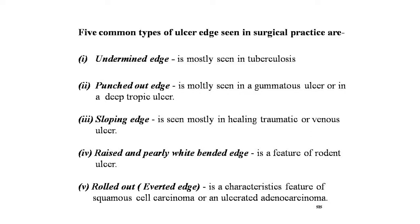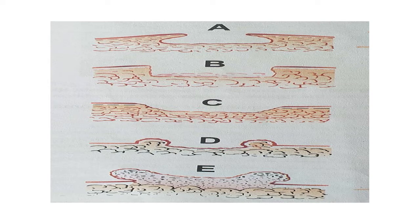Fourth, the raised and pearly white beaded edge is a feature of rodent ulcer. Fifth, the rolled-out everted edge is characteristic of squamous cell carcinoma or an ulcerated adenocarcinoma — caused by fast-growing cellular disease where the growing portion of the edge heaps up and spills over the normal skin. Images show: A — undermined edge, B — punched-out edge, C — sloping edge, D — raised pearly white beaded edge, E — rolled-out everted edge typical of squamous cell carcinoma.